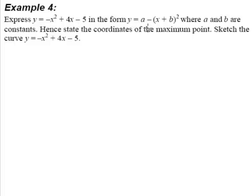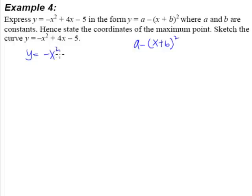What you must come to realize is this form is in the complete square form, because as you can see, there is a perfect square here. So basically your job is very simple — it's just to change this into this form using the complete square method. So let us go through the steps of completing the square one more time.